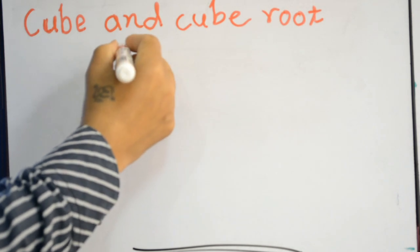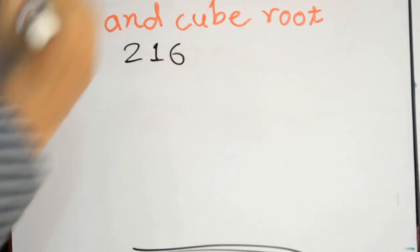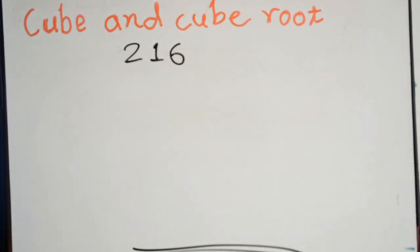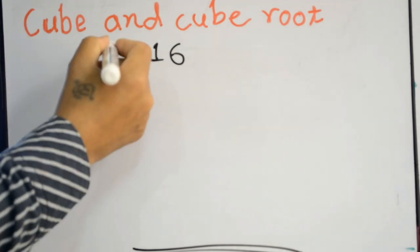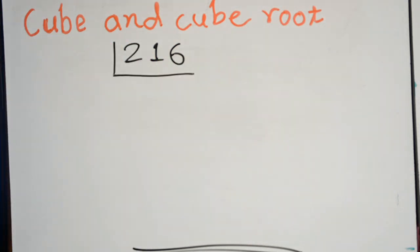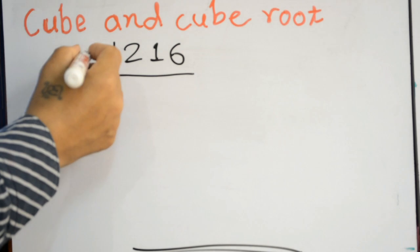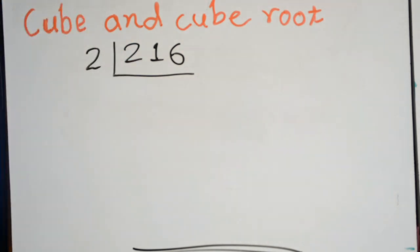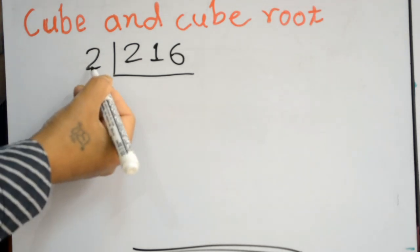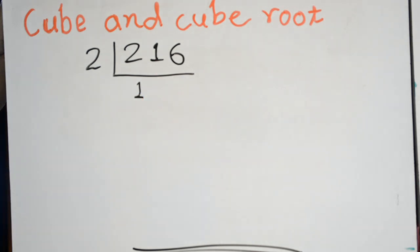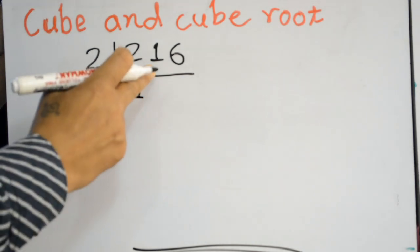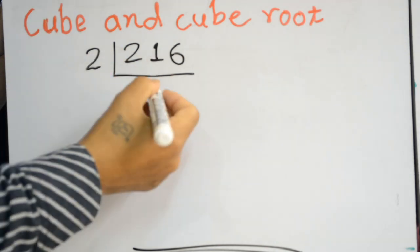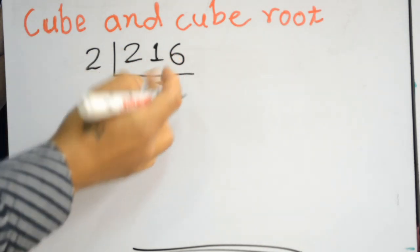Let's take the example of 216. What is the cube root of 216? To find it, we need to do prime factorization. We make the factor tree symbol and start from the smallest prime number, which is 2. We divide 216 by 2.